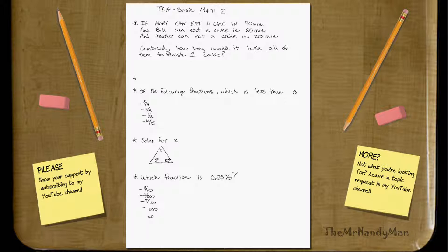Combined, how long would it take for all of them to eat one cake? Well, why don't we write it as a little mathematical equation. I'm going to just say M equals one cake every 90 minutes, 1 over 90, every X, every minute.